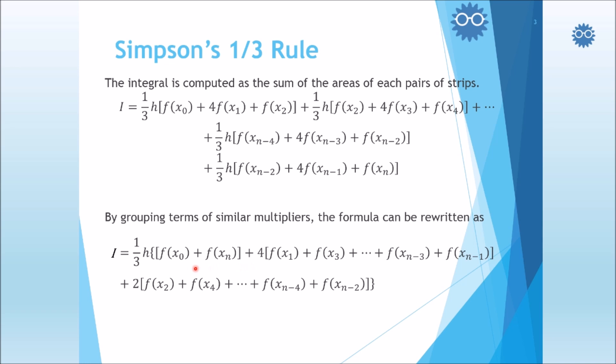By taking one third as a common factor, we get two terms multiplied by 1 and summation of terms multiplied by 4. We notice here the subscripts are odd, which are multiplied by 4. And the subscripts here of x's are even of the terms which are multiplied by 2.